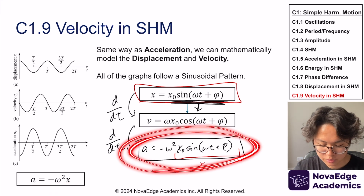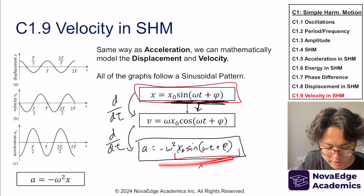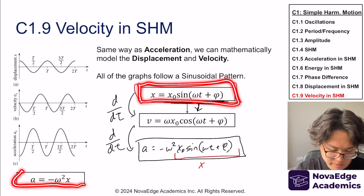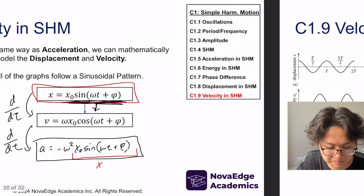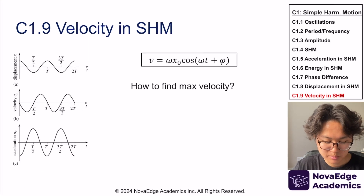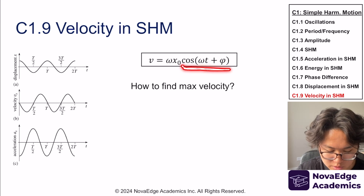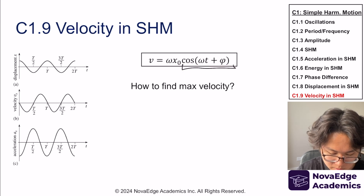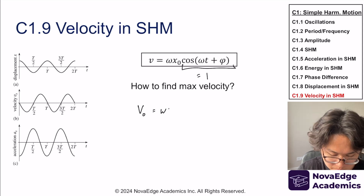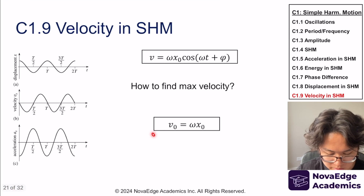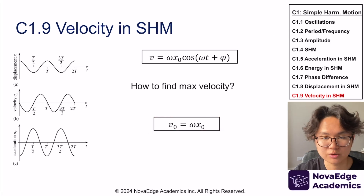The acceleration as a function of time is not in your data booklet, so usually they will never ask you to compute acceleration directly as a function of time. Instead, they'll ask you to calculate displacement at a given time using the displacement equation, and then calculate acceleration from that displacement. One common question is: what is the maximum velocity? That's when the cosine function equals one, so the maximum velocity v₀ equals ωx₀. This is in your data booklet.